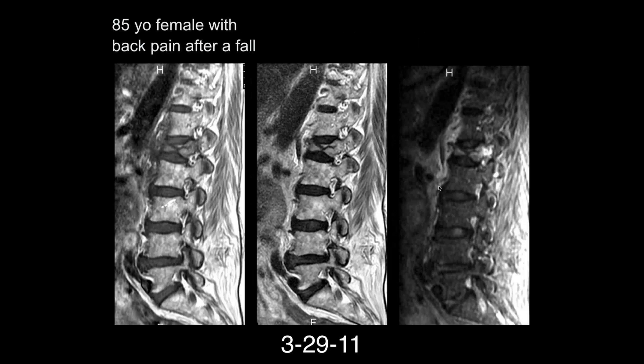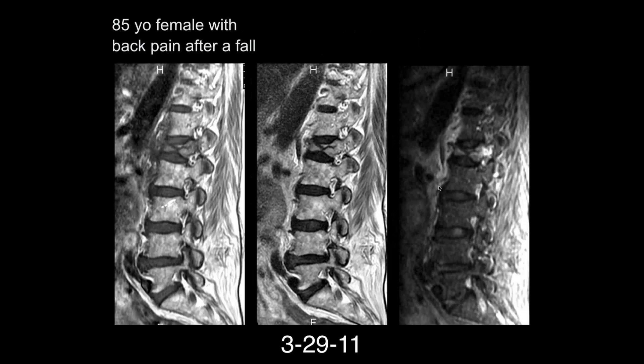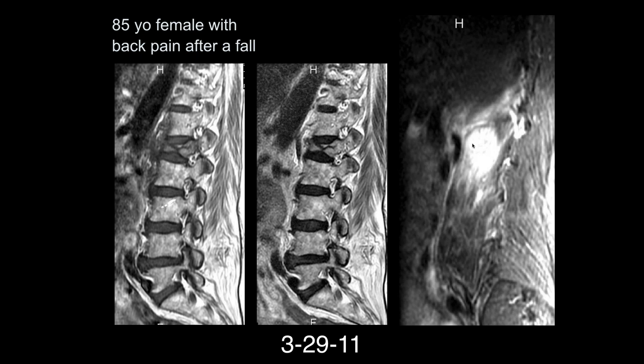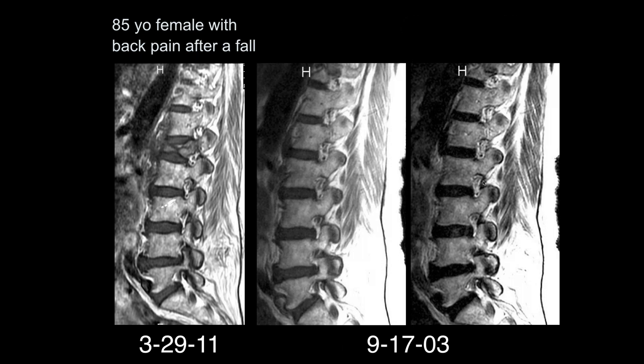Severe compression deformity of L1 with a horizontal chance-type component. On a more lateral sagittal image we can see a hematoma. This was also a follow-up study — actually, this was a previous study before the fracture, and you can see the change in morphology due to the fracture. That was an acute compression fracture with a lateral hematoma just as suggested.